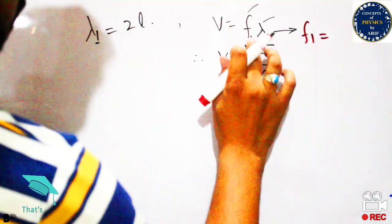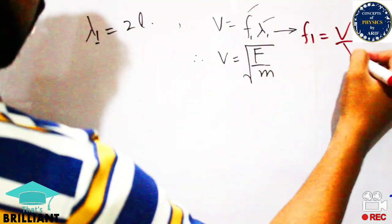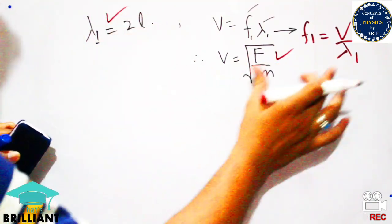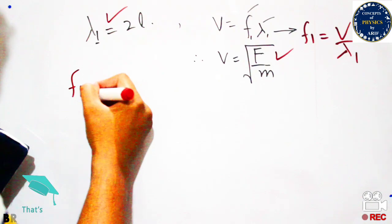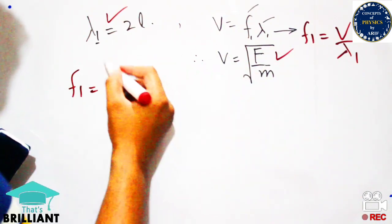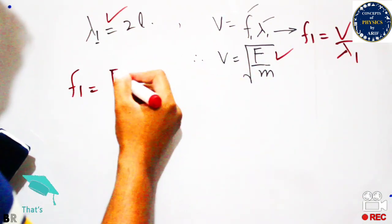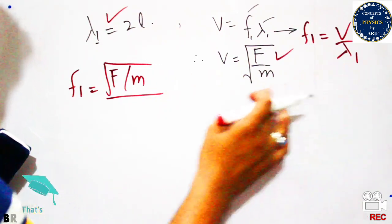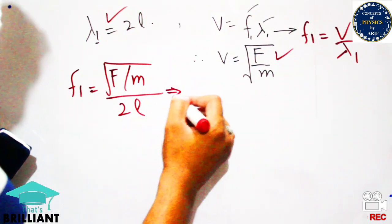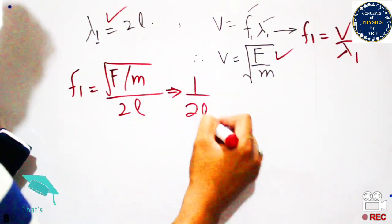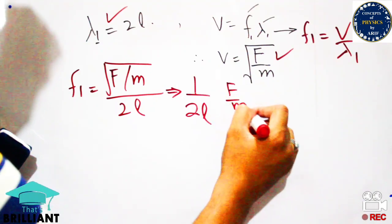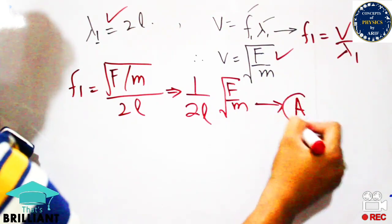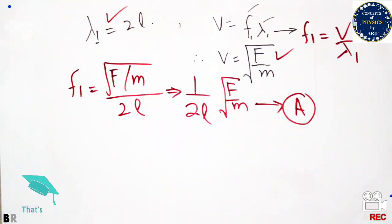So f₁ equals v over lambda₁. We know v equals square root of F over m, and lambda₁ equals 2l. Substituting, f₁ equals 1 over 2l times the square root of F over m. Separating all terms, this is Expression 1: f₁ equals 1 over 2l times square root of F over m.